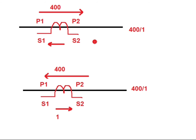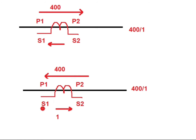How does the relay understand whether current is flowing towards the bus or from the bus? For the CT: if in the primary side current flows from P1 to P2 direction, then in the CT secondary side current will flow from S2 to S1 direction. For example, if the CT ratio is 400/1 and 400 amperes flows from P1 to P2 in the primary, then in the secondary side current flows from S2 to S1. Similarly, if primary current flows from P2 to P1, the secondary current direction will be from S1 to S2.